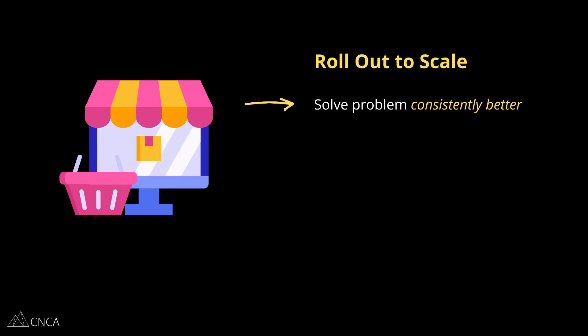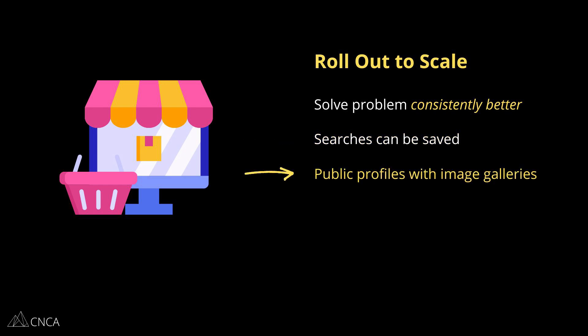From rollout to scale, the MVP should be solving the problem consistently better. For our marketplace, the search feature can now allow consumers to save past searches. The service provider profiles can accept a gallery of images to showcase past work. And the scheduling system can accept requested dates and times from the consumer.